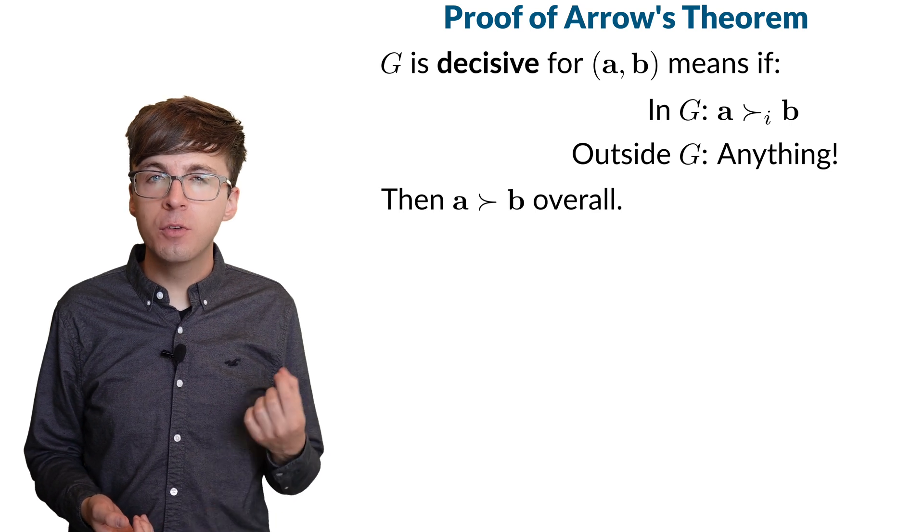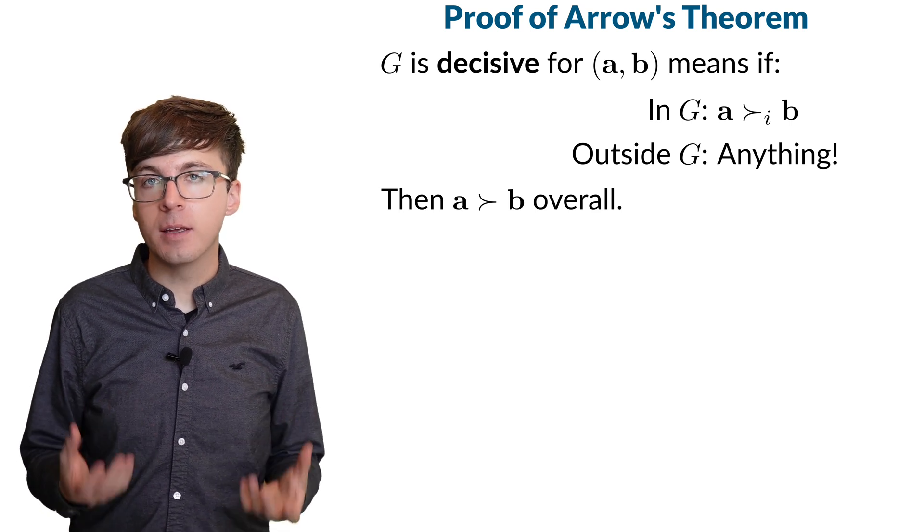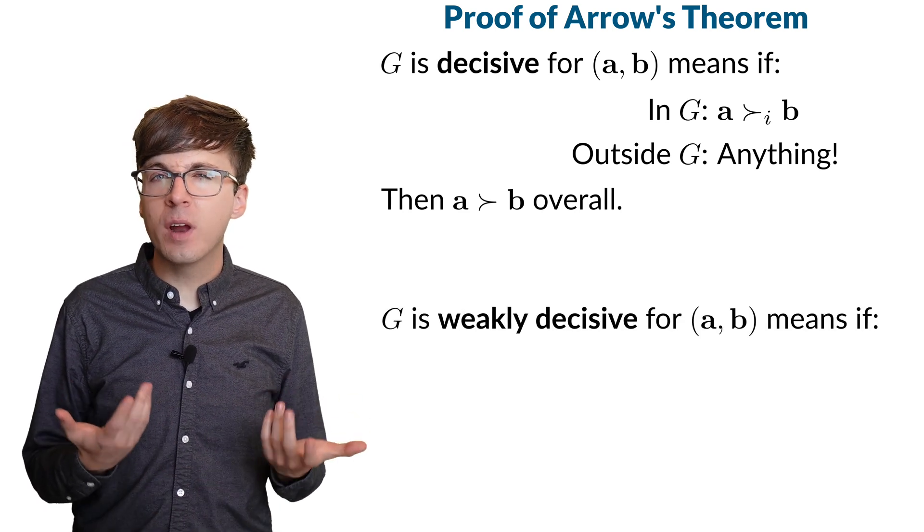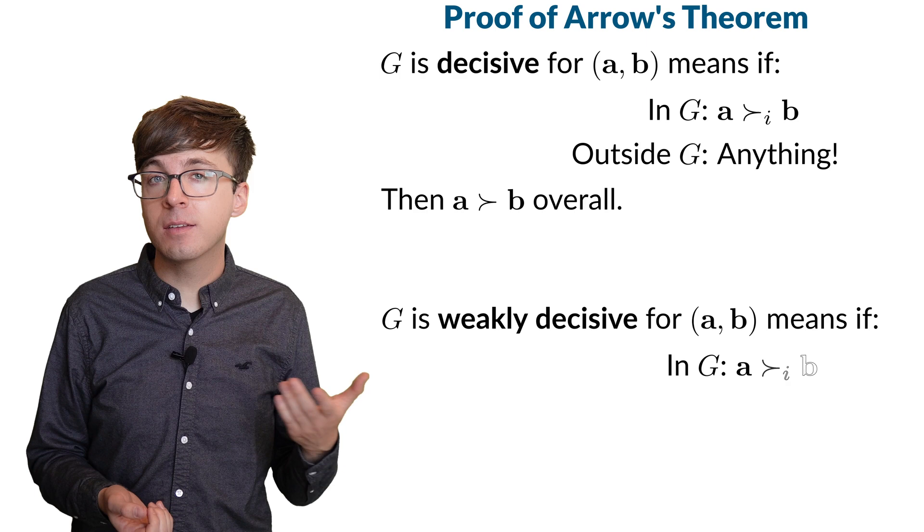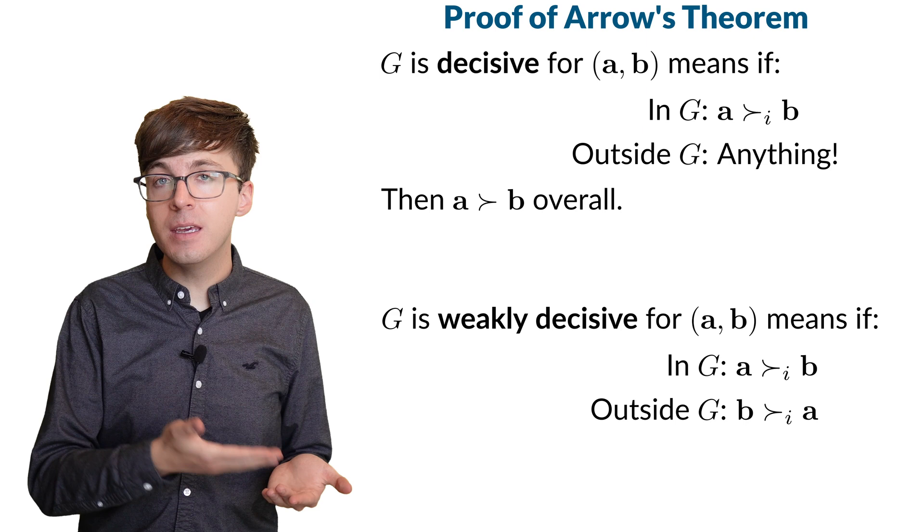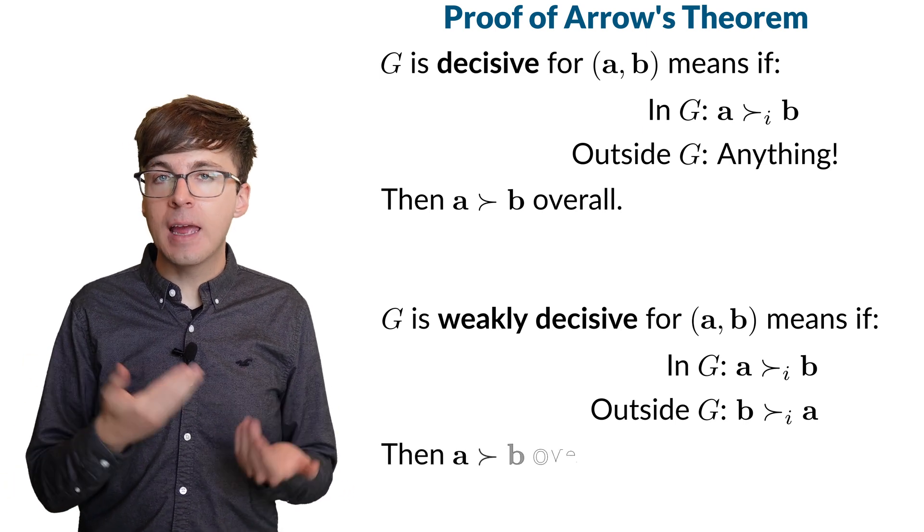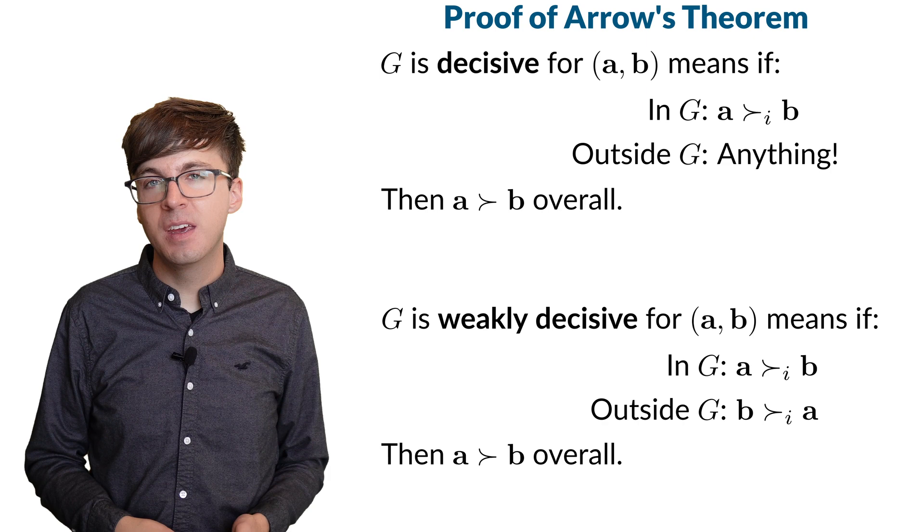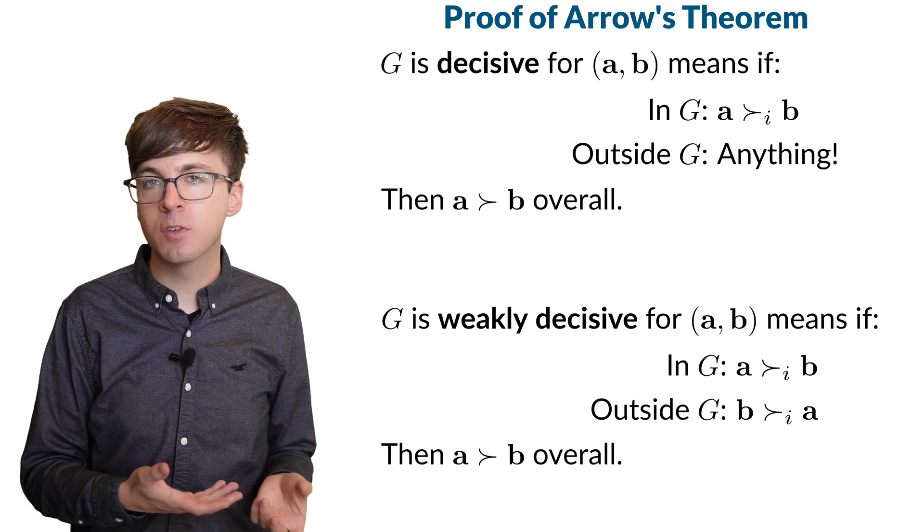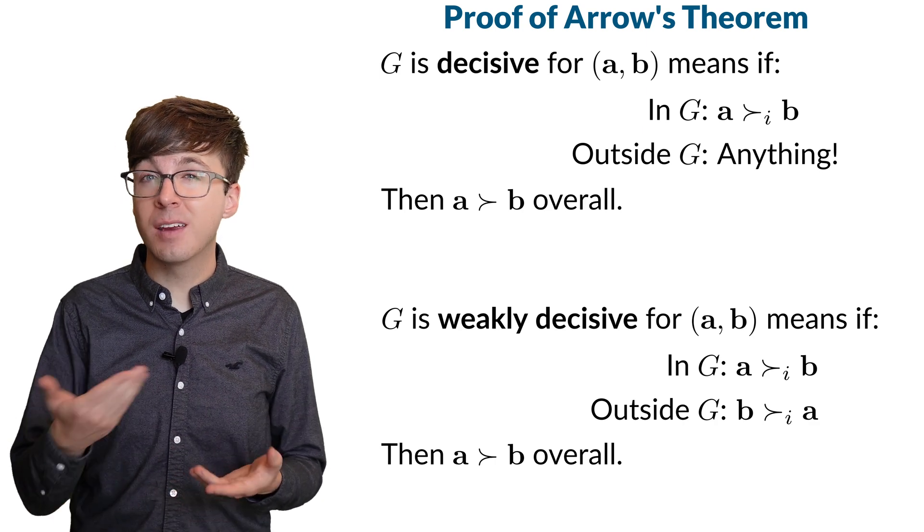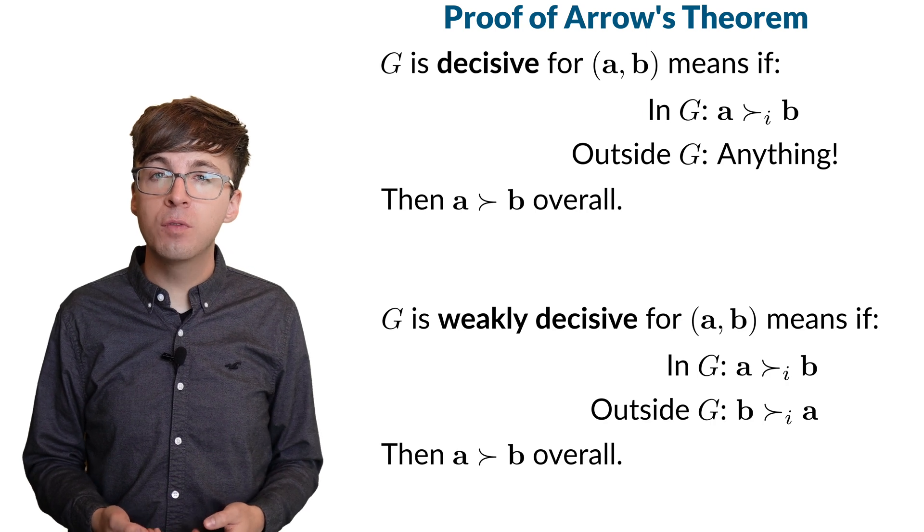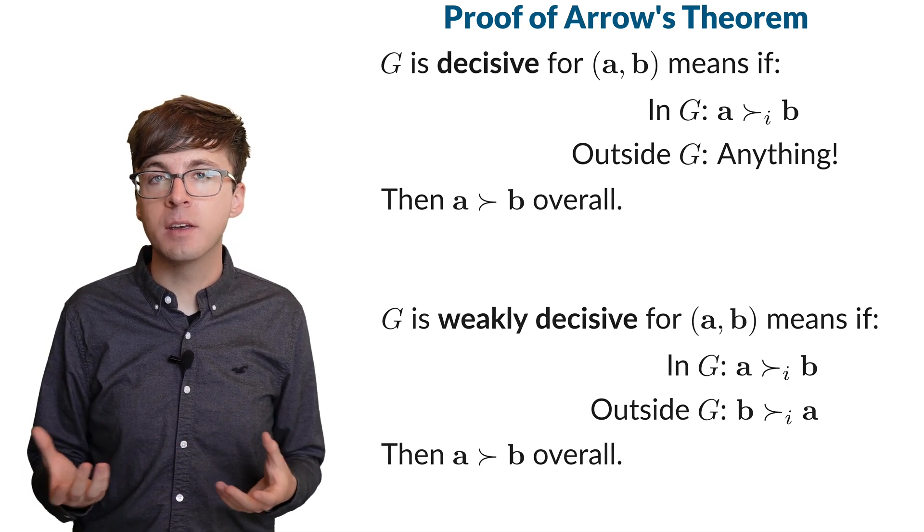To help us in our proof, we'll introduce one more idea. Weakly decisive. A coalition is weakly decisive for AB if, whenever everyone in the coalition ranks A above B and everyone outside the coalition ranks B above A, then A will beat B in the group's rankings. We can think of this as like the worst case scenario from the coalition's perspective. Everyone outside the coalition ranked B above A. This condition will be easier for us to use in the proof since we'll know exactly what situation we need to check.